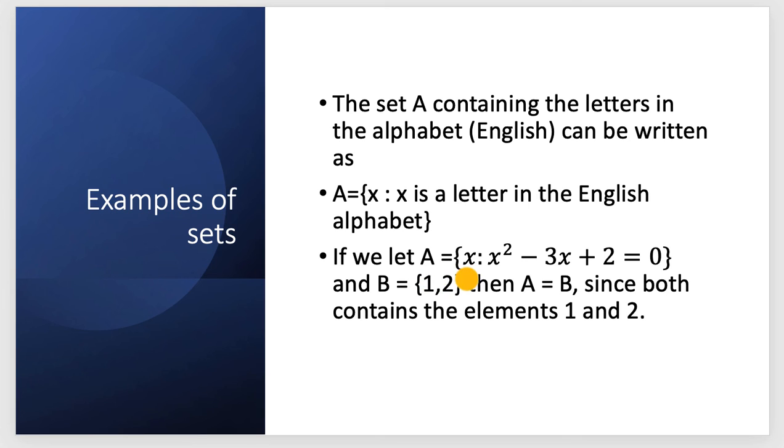If we let A = {x : x² - 3x + 2 = 0} and B = {1, 2}, then A = B, since both contain the elements 1 and 2. Because the answer for this where x² - 3x + 2 = 0 is where x = 1 or x = 2. They're equivalent because they contain the elements 1 and 2.